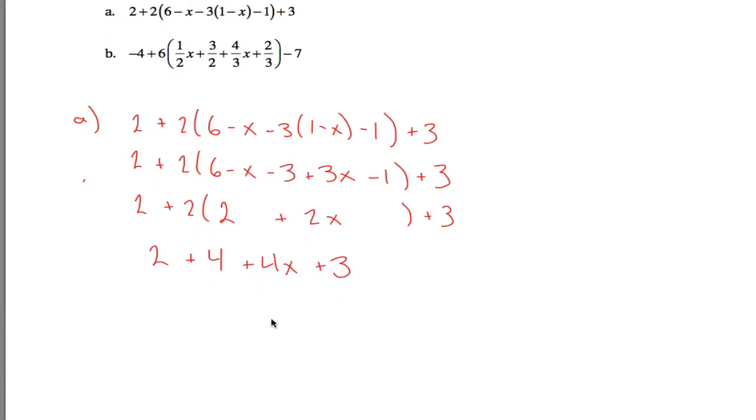And now I can combine like terms one more time. I only have one term with an x in it, but I have 2 plus 4 plus 3, 3 different constant terms. 2 plus 4 is 6, plus 3 more is 9. So 4x plus 9 is what this thing simplifies to. Another common mistake is to try to take this a step further to add 4 and 9 and call it 13x or something, but you can't do that because they're not like terms. This term is your x terms and this term is your constant terms.